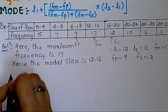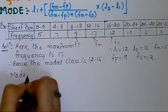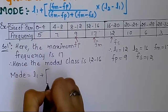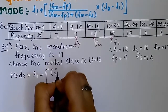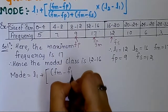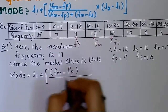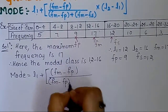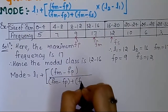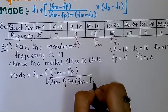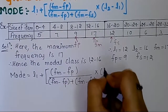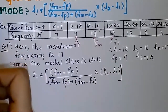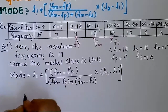Now we have all the values and we simply substitute them into the formula. Mode is equal to l1 plus, in bracket, fm minus fp upon fm minus fp plus fm minus fs, into l2 minus l1. Based on mode, this type of question can be asked in exams because ungrouped data is just a one-word question, so just prepare it.